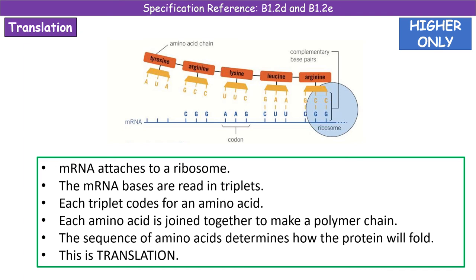Step two is translation, which takes place in the cytoplasm. Our mRNA has attached to a ribosome, and as that mRNA strand moves through the ribosome, it reads that sequence in threes. Those threes are what we refer to as a triplet code — each little sequence of three bases is a triplet, and each triplet codes for a particular amino acid.